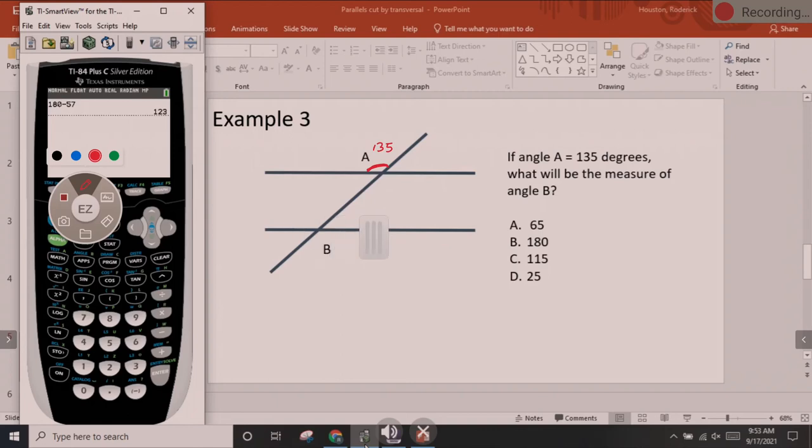But if I can't see that visually, what I have to do is I have to do 135. Then I can find the small one right here next to it, the one directly next to it by doing 180 minus 135, and in that situation, I would get 45. So we know that this one is 45.